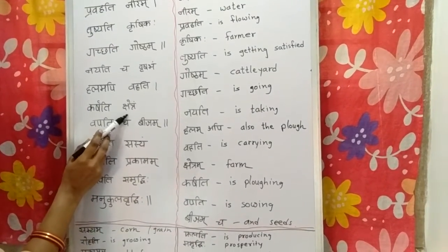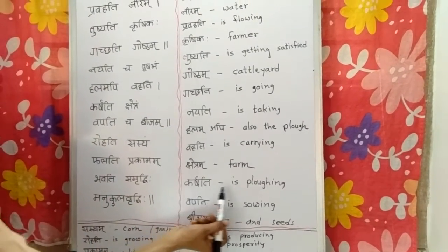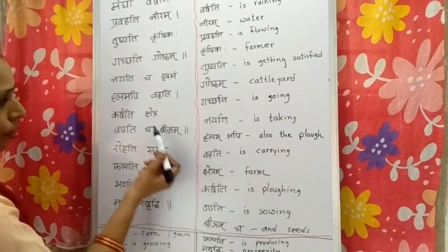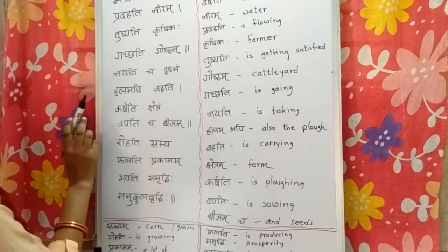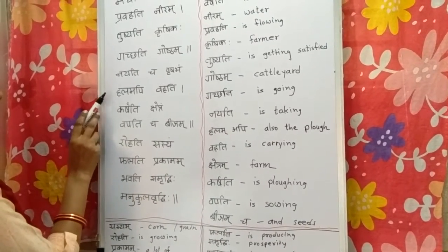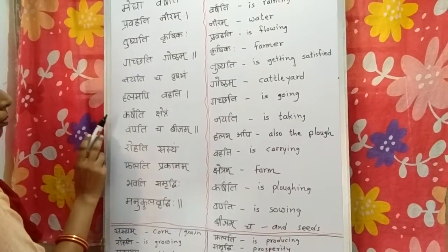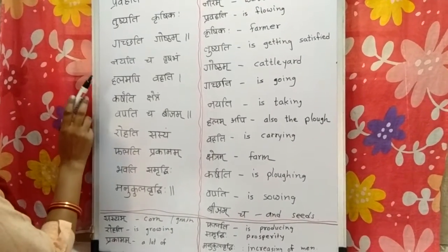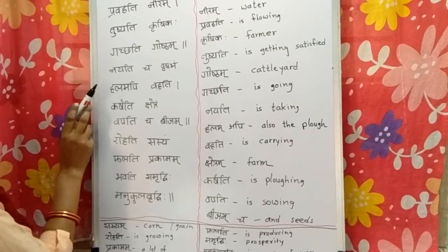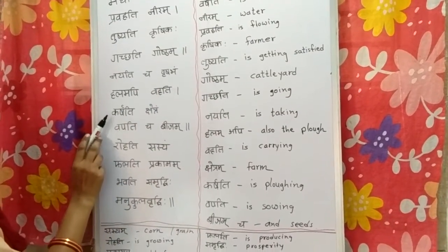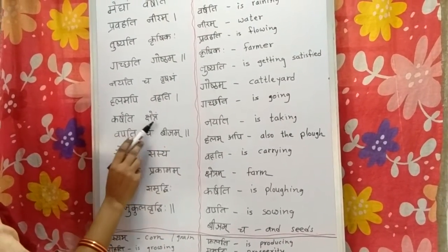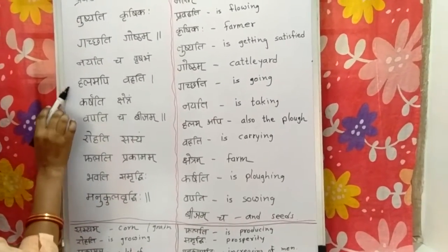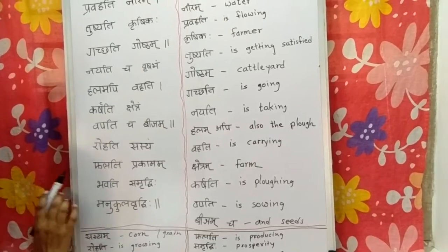Karshati Kshetram — Karshati means he is ploughing, and Kshetram means farm. After taking the bullocks and carrying the plough, Karshati Kshetram — he is ploughing the farm with the plough and the bullocks. वह अपने खेतों को जोत रहा है हल और bullocks की मदद से.